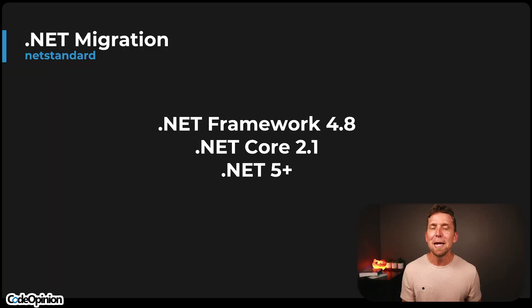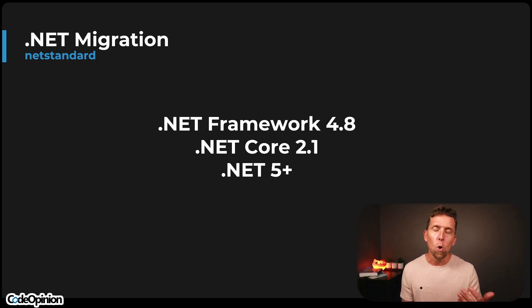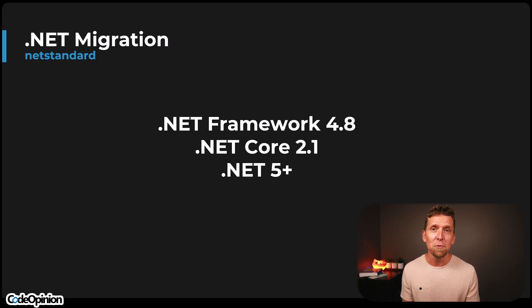To go from .NET Framework on Windows to current-day .NET on Linux required an intermediate step. The naming and versions are very confusing during this migration. We're talking about .NET Framework 4.8 on Windows only. Then Microsoft released .NET Core 1 and 2.1, which could run on Linux — completely separate from .NET Framework. After version 3, there was no 4; it got rebranded to just .NET. So then it turned to .NET 5, and now we're at .NET 8.